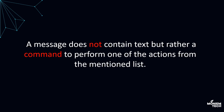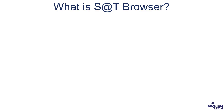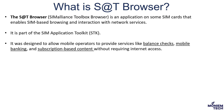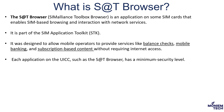From a technical standpoint, these SMS messages are defined by special parameters. A message contains not text, but rather a command to perform one of the actions from this list. SMS messages are used to make the STK menu interactive. One of the applications included in STK, the SIM toolkit, is the S&T browser. It is an application on the SIM card that enables SIM-based browsing and interaction with network interfaces — it's part of the SIM toolkit. It was designed to allow mobile operators to provide services like balance checks, mobile banking, internet access, and so on. Each application on the SIM card, such as S&T, has a minimum security level.